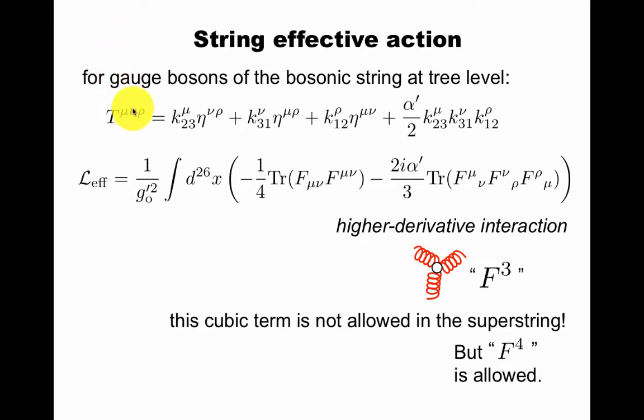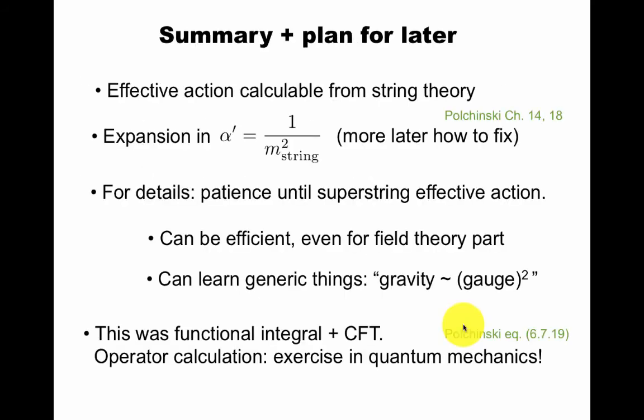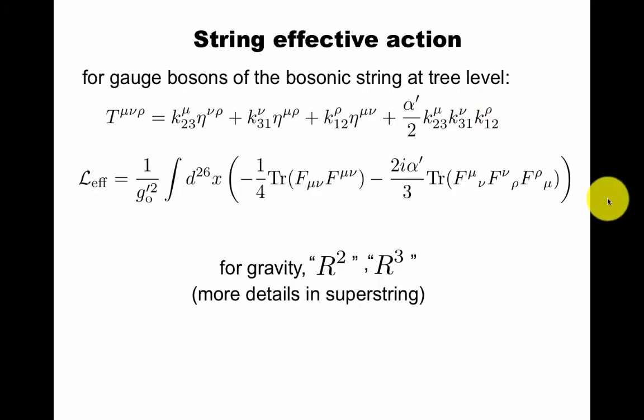So we can summarize our results in a string effective action at low energy. We found the S matrix is polarizations E contracted into this tensor T. We recognize these three terms as generated in the S matrix from just the Yang-Mills kinetic term. To reproduce this, you need to add something. So I draw an additional vertex here, which is a new vertex compared to the usual Yang-Mills vertex from here. This cubic term turns out not to be allowed in the super string. But F to the fourth is allowed, Riemann squared and Riemann cubed, and we'll study that later. We saw that in a bosonic string, in particular, we can compute this coefficient. So it's not a free parameter.